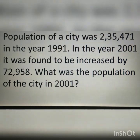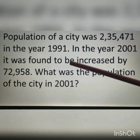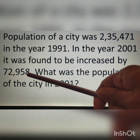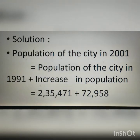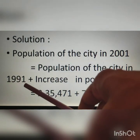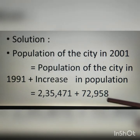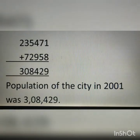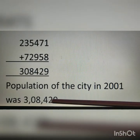Word problems related to large numbers. Example number 1: The population of a city was 2,35,471 in the year 1991. In the year 2001, it was found to be increased by 72,958. What was the population of the city in 2001? Solution: It is given that the population in 1991 was 2,35,471 and it increased by 72,958. By adding these two numbers, we will get the population in 2001, which is 3,08,429.